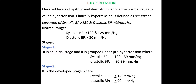Good morning everyone. In today's class we will discuss hypertension. Hypertension is elevated levels of systolic and diastolic blood pressure above the normal range. Clinically, we define it as persistent elevation of systolic blood pressure of 130 mmHg and diastolic blood pressure of 80 mmHg. The normal range for systolic blood pressure is between 120 and 129 mmHg and diastolic blood pressure less than 80 mmHg.